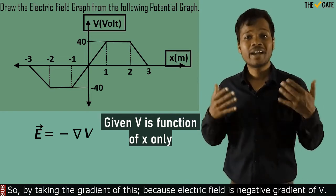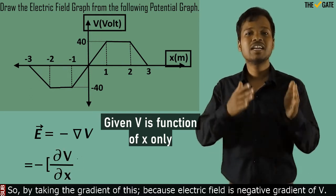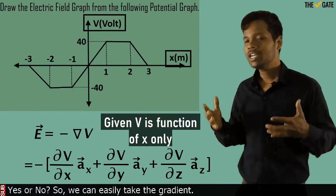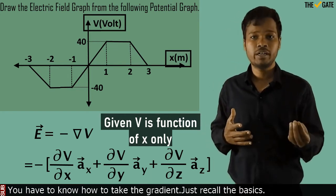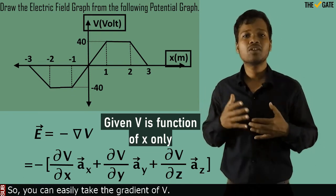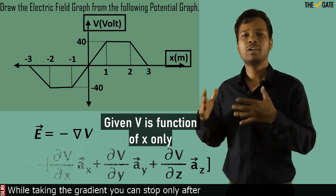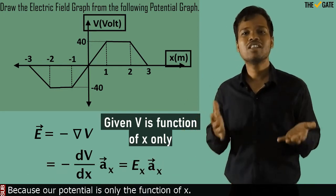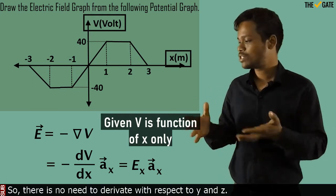By taking the gradient of this — because electric field is the negative gradient of V — we can easily take the gradient. You have to know how to take the gradient; just recall the basics. While taking the gradient, you can stop only after taking the derivative with respect to x, because our potential is only a function of x. There is no need to take the derivative with respect to y and z.